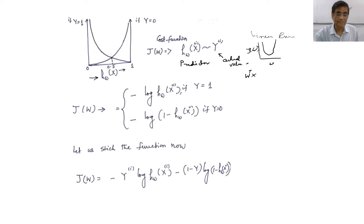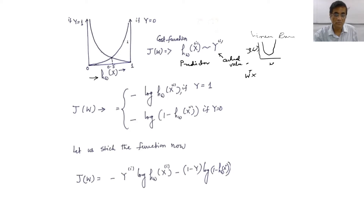Similarly for class 0: when a sample belongs to class 0 and the predictor says 0, there is no cost. As the difference increases, the cost increases as a penalty. And exponentially, the cost is huge when a sample belongs to class y equals 0 but the predictor says it belongs to class 1. The cost is ever-increasing in that direction as well.